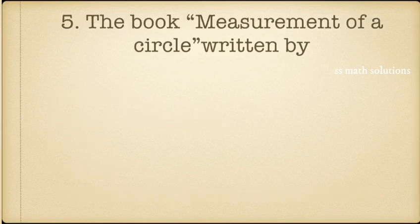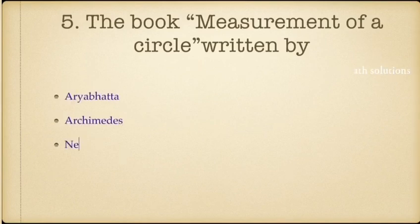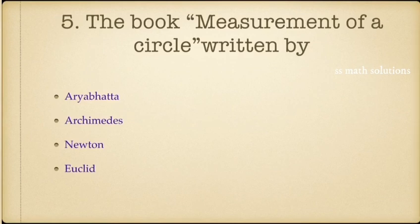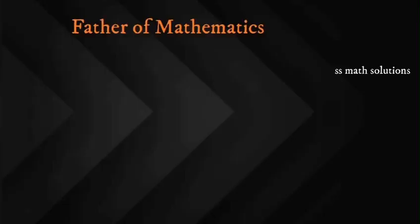Fifth question: the book Measurement of a Circle was written by whom? Options: Aryabhata, Archimedes, Newton, Euclid. The answer is Archimedes. Measurement of a Circle was written by Archimedes.